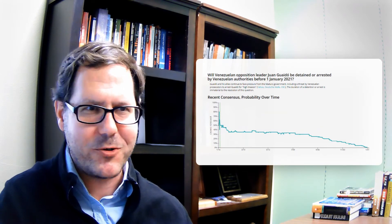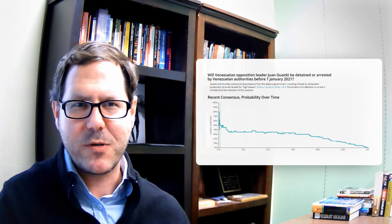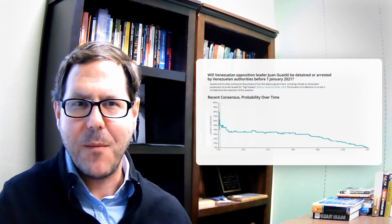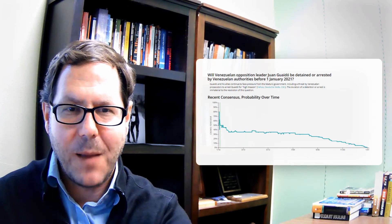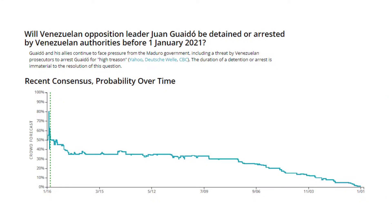But that's where Tetlock's good judgment open project comes in where he ran these competitions and people sort of join in and make forecasts about all sorts of things and you can kind of aggregate them. So this is a question about will the Venezuelan opposition leader be detained between a certain period of time. Initially people seem to be uncertain about 50 percent and then there's maybe an event that spikes it up to around 80 percent but then pretty quickly people are back down to 50 percent.